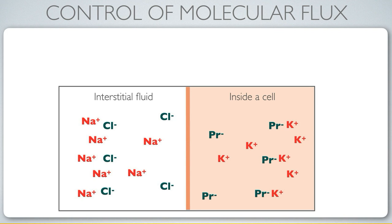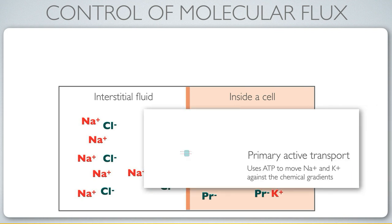This difference in concentration is in part facilitated by active transport — there are transmembrane proteins, and this particular transmembrane protein will move sodium against its chemical concentration gradient to extract it from the interior of the cell and push it into the interstitial fluid outside the cell.